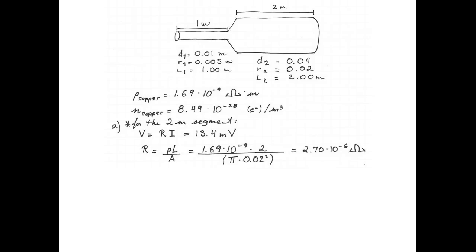I can find the resistance of the 2 m segment by using ρL/A. The resistivity of copper is 1.69 × 10^-9 Ω·m, which I'm going to multiply by the length of 2 meters and divide by the area of the wire, which will be π × R^2. So π × 0.02^2, and that gives me a resistance of 2.70 × 10^-6 Ω.